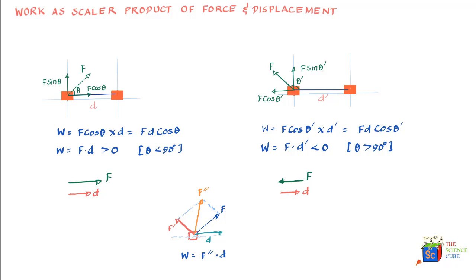Alternatively, the work done equals the sum of work done by each force individually: work done = f dash dot d plus f dot d, which gives the same result as f double dash dot d. The key point is that if you have two, three, or n number of forces acting on a mass, you add them vectorially and the dot product of the resulting force with the displacement gives you the total work done on the mass.